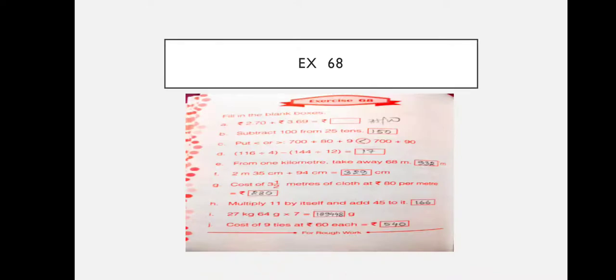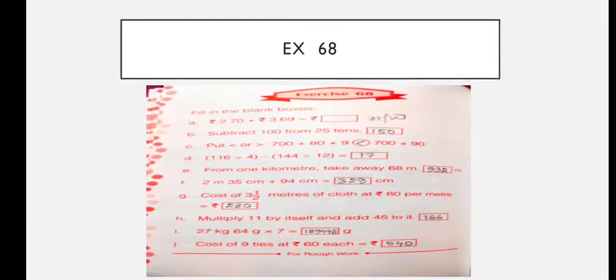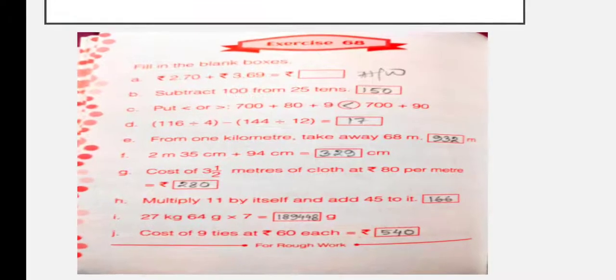Next: multiply 11 by itself and add 45 — that means 11 times 11, then add 45. Next: 27 kg 64 grams multiplied by 7 — converting to grams and multiplying by 7 gives 189,448 grams.